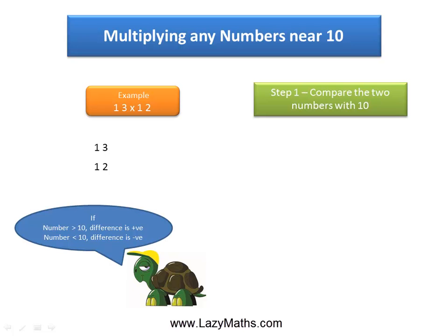In the comparison, if the numbers we are comparing are more than 10, we put the difference as positive, and if they are less than 10, we put the difference as negative. 13 is 3 more than 10, so we put plus 3 as the difference. 12 is 2 more than 10, so we put plus 2 as the difference.